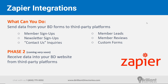Phase two — which we talked about when we first started discussing webhooks — is coming very soon. We can see the light at the end of the tunnel. In phase two, you'll actually be able to receive data into your Brilliant Directories website from third-party platforms. Right now you can export data from your BD site to third parties; coming soon, you'll be able to bring data in as well.